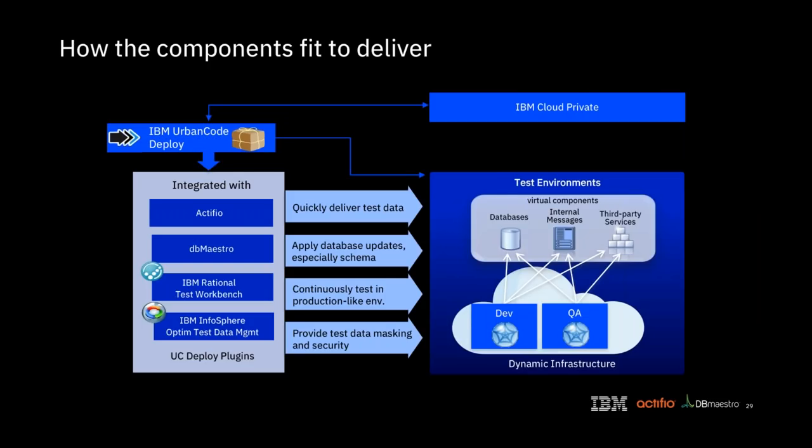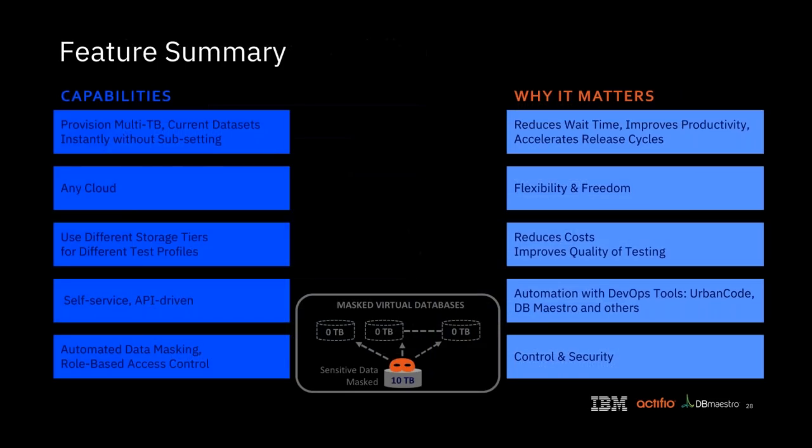It's all fully API-driven — all driven by Urban Code, can leverage DB Maestro. It works with the whole development pipeline. And of course we have the security and the ability to automatically apply masks, so the data you get is data you can feel confident doesn't have fields that might put you at risk, because there are more and more regulations appearing every single day.